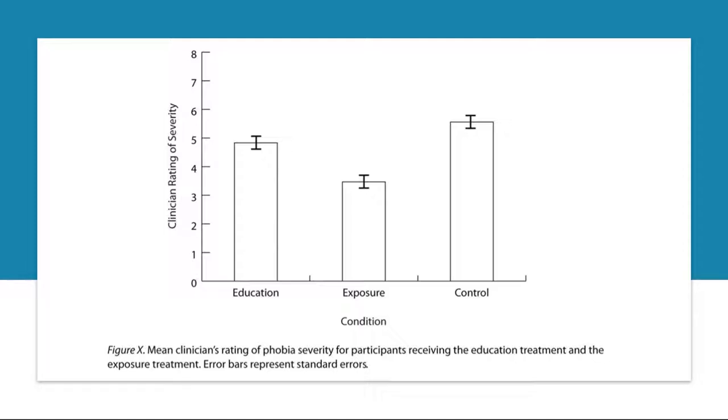Although they sometimes extend one standard deviation in each direction, they're more likely to extend one standard error in each direction, as in this figure. The standard error is the standard deviation of the group divided by the square root of the sample size of the group. The standard error is used because, in general, a difference between group means that is greater than two standard errors is statistically significant. Thus, we can see whether a difference is statistically significant based on a bar graph with error bars.